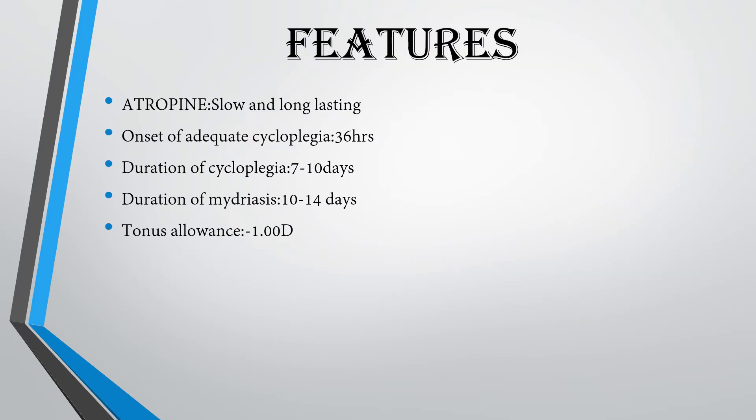This allows the iris dilator muscle to dilate and mydriasis is achieved. Atropine is the strongest cycloplegic — a slow acting but very long lasting drug. Its onset of adequate cycloplegic effect is 36 hours, meaning it takes almost 1.5 days to fully show its cycloplegic effect. The cycloplegic effect lasts for 7 to 10 days, and the mydriasis lasts for 10 to 14 days.